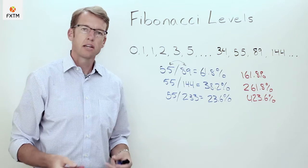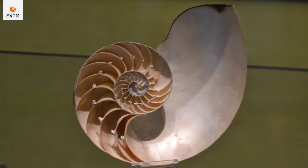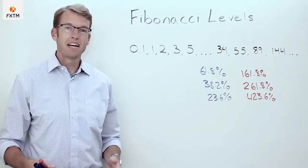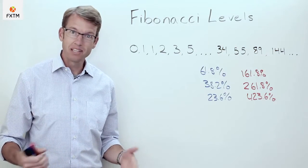These ratios do show up in nature. Take the nautilus shell — as those spirals become smaller and smaller, they do so according to the Fibonacci ratio, each spiral being a ratio of the larger one beyond it. Similarly, the rows of seeds in a sunflower blossom grow or shrink in proportion to the Fibonacci ratios.